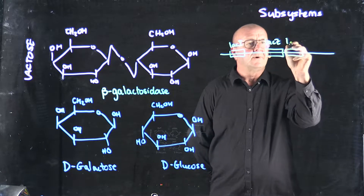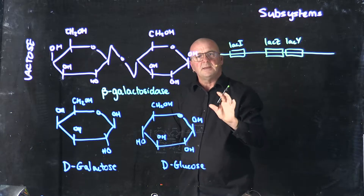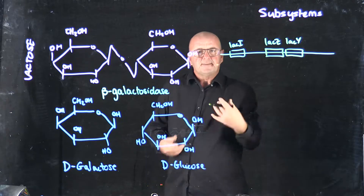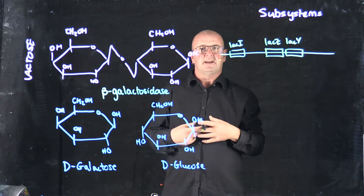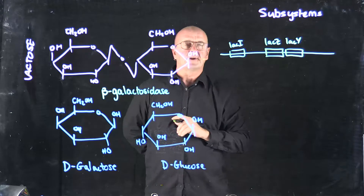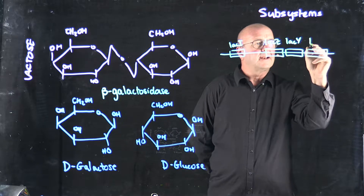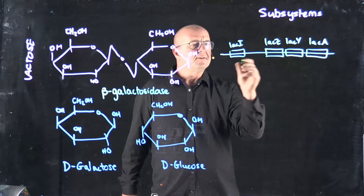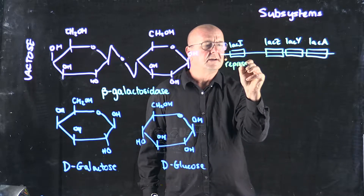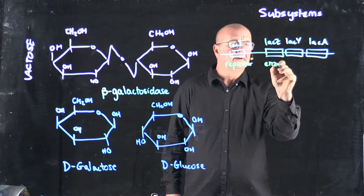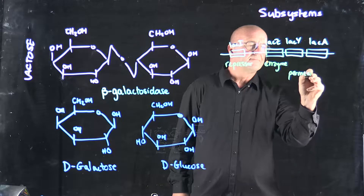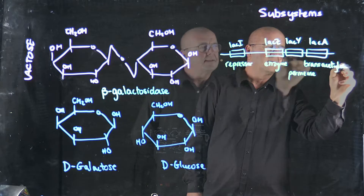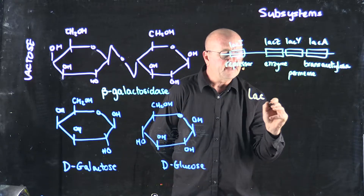We have LACY, and LACY is a protein that sits in the membrane of the cell and specifically imports lactose. So if the cell is sensing lactose, if there's lactose around, then LACY will specifically bring that into the cell. And then LACA, and LACA is what's called a transacetylase. So we have four genes: the repressor, the enzyme, the permease, and the transacetylase. These four genes are what are called the LAC operon.